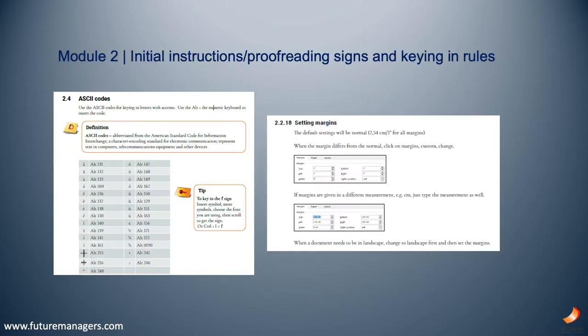There is a new module — Module 2 — called Initial Instructions, Proofreading Signs and Keying In Rules. This new module will help students understand the difference between hardware and software, as well as the screen layout of a Microsoft Word document. Other functions and skills covered include how to save a new document, the find and replace function, footnotes, endnotes, and symbols. Students can refer to this module whenever they are unsure about how to save a document or use certain functions in MS Word.